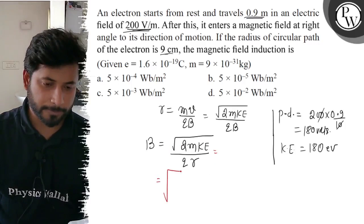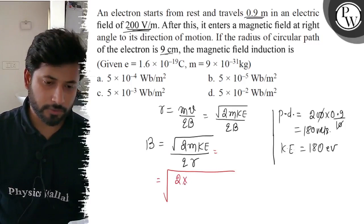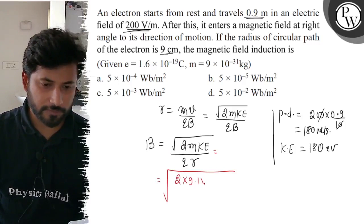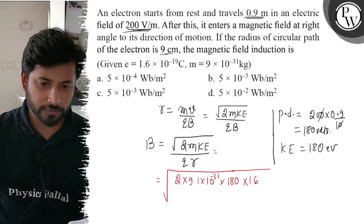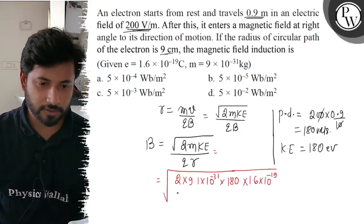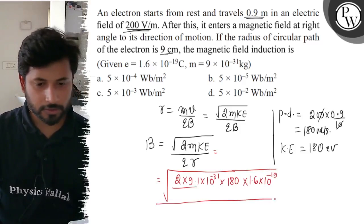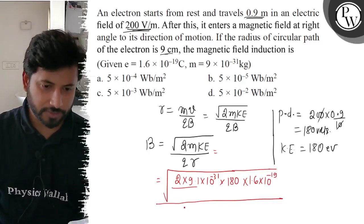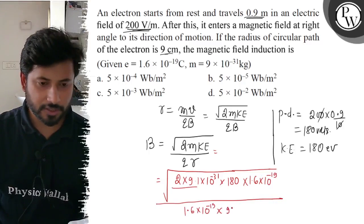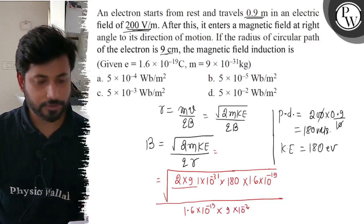Ab aapko values put karne hai is expression ke andar. Toh B aa jaega: root under 2 times mass of electron 9.1 into 10 to the power minus 31, times kinetic energy 180 into 1.6 into 10 to the power minus 19 joules, divided by charge of electron 1.6 into 10 to the power minus 19 into radius 9 into 10 to the power minus 2.